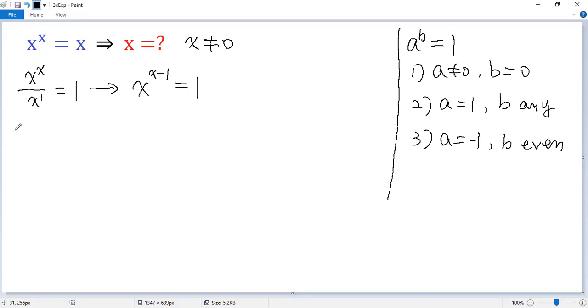For the first case, we let exponent x minus 1 equals 0. So we get x equals 1. Good solution. Why? Because the base is non-0.